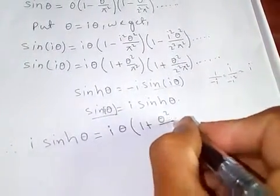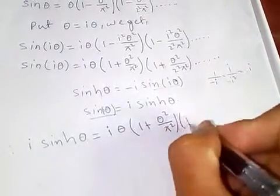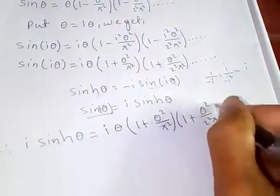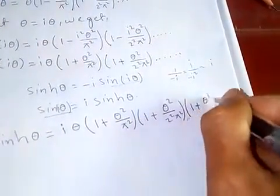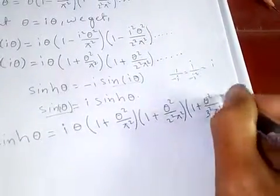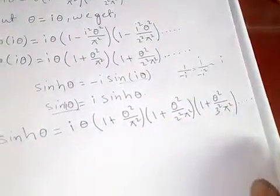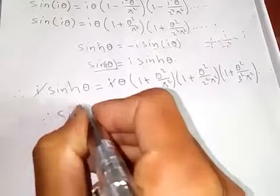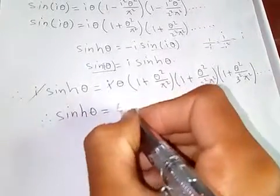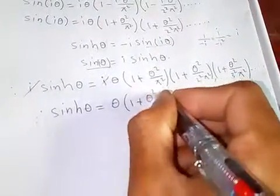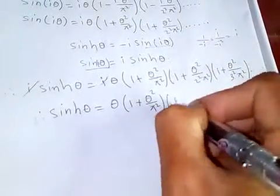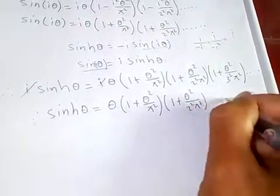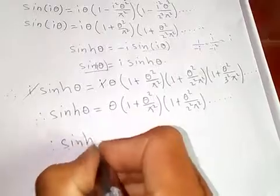Continuing: i·sinh(theta) equals i·theta times (1 plus theta squared over pi squared) times (1 plus theta squared over 2 squared pi squared) times (1 plus theta squared over 3 squared pi squared) and so on. Cancelling the i from both sides, we get: sinh(theta) equals theta times (1 plus theta squared over pi squared) times (1 plus theta squared over 2 squared pi squared) and so on.